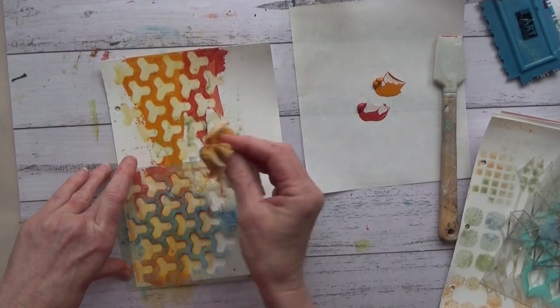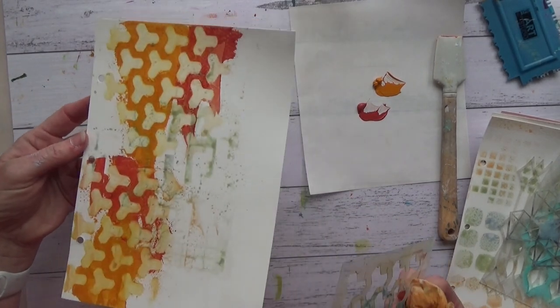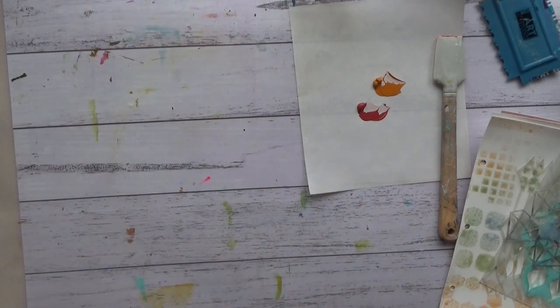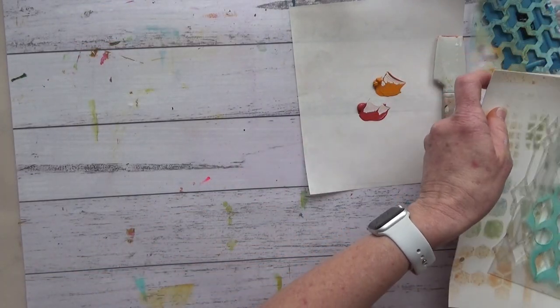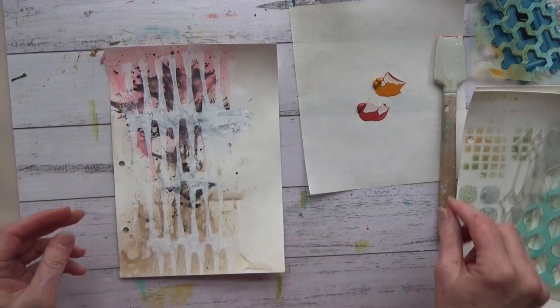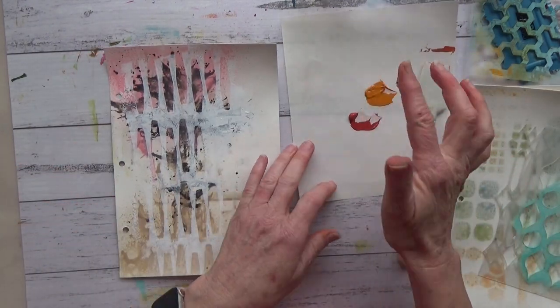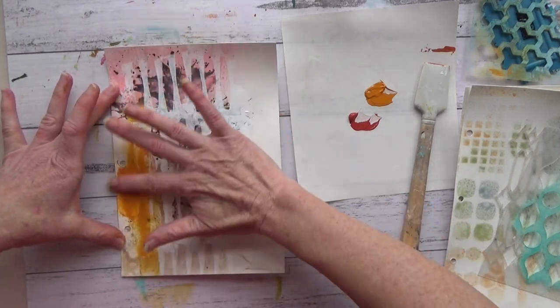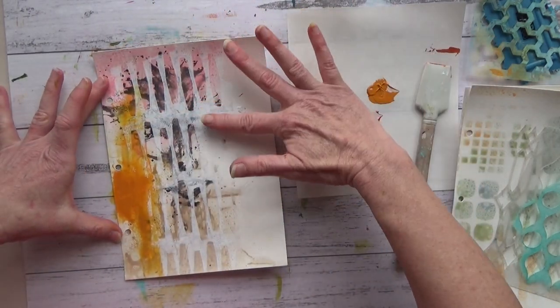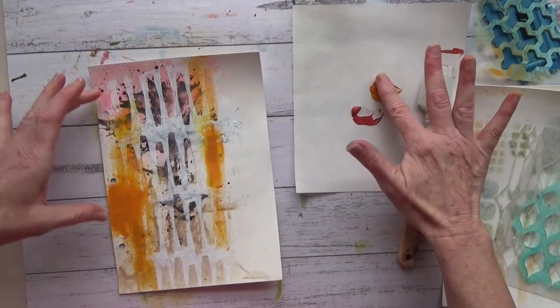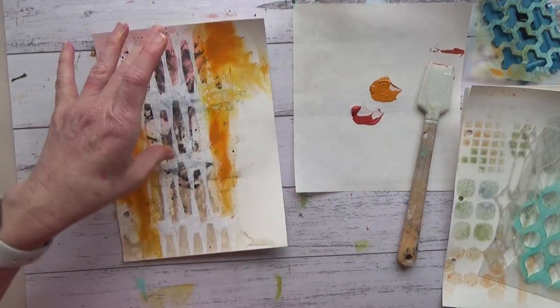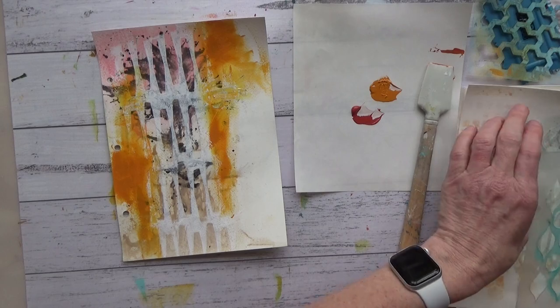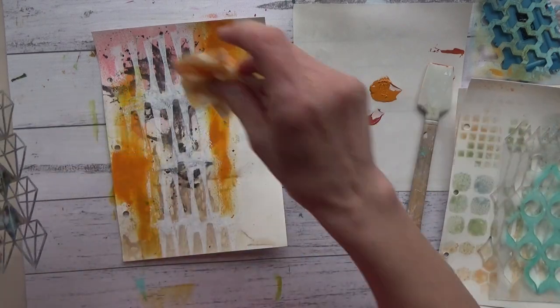And then take a stencil that's quite a wide opening. Don't get one that's too intricate because this will not treat the stencil terribly well. I like the Scrap FX stencils because they're quite hardy and these particular ones have got quite an open design. And this technique works really well with that. So you just add the paint onto the page and wipe it through the stencil.